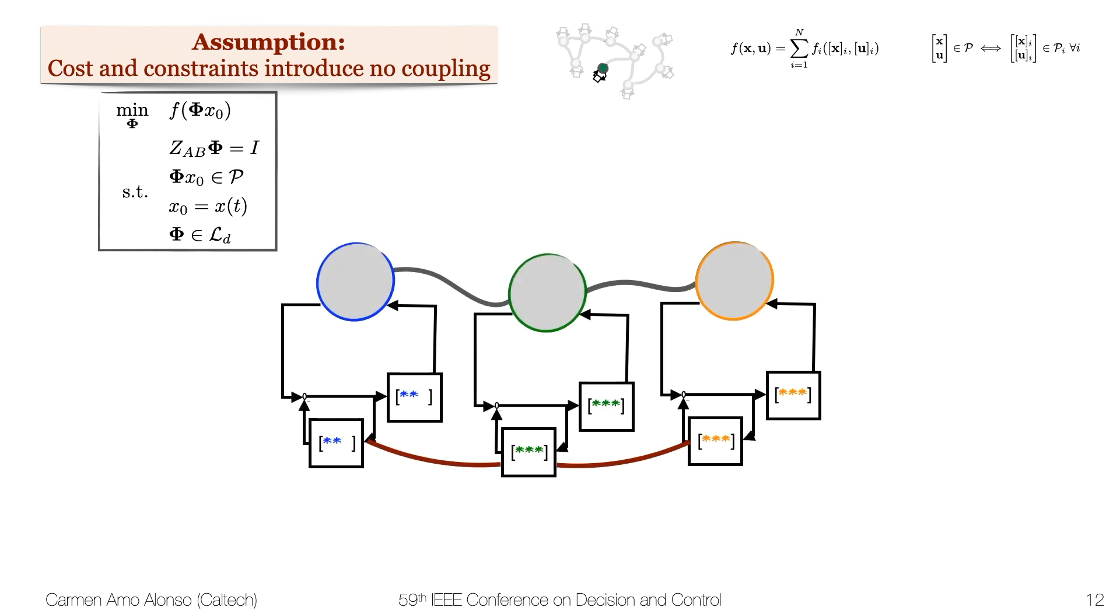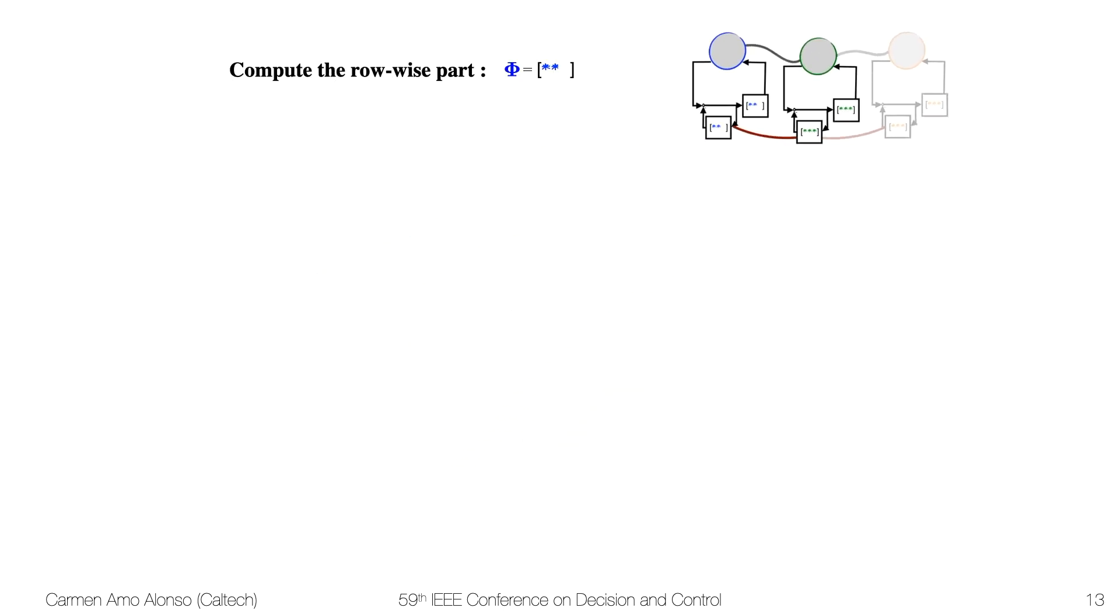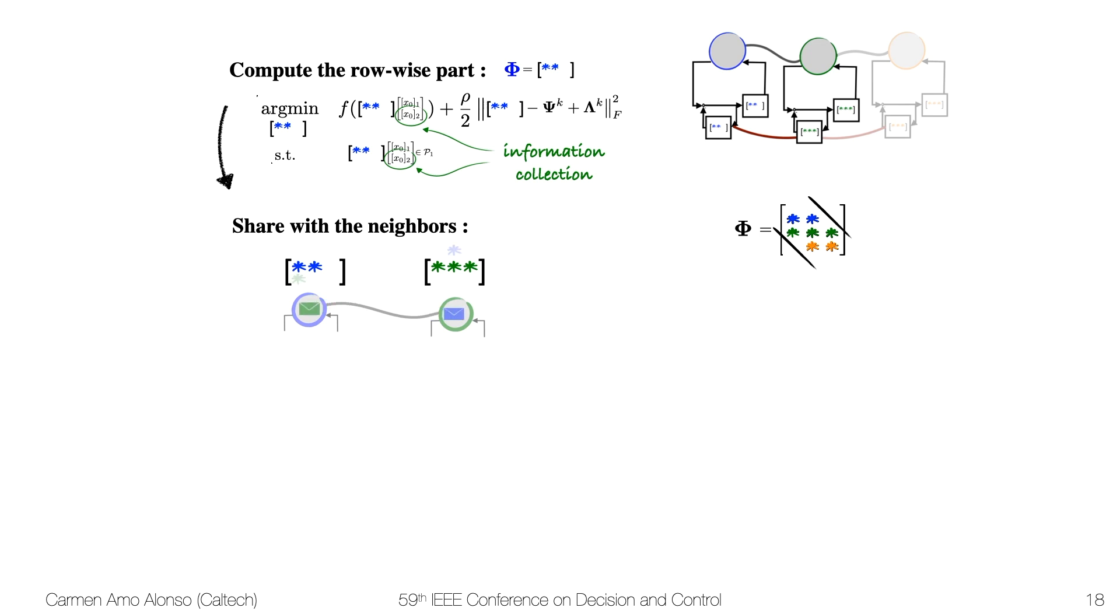And let me illustrate this algorithm in this three-node network where due to the locality constraints if I'm the blue subsystem I don't care what the orange subsystem is doing and I can only communicate with my neighbor, in this case the green subsystem. And we can focus on what the blue subsystem is doing. We split this problem into row-wise computations and column-wise computations for this matrix φ, and so we started with the row-wise computations. And as the blue subsystem we're only going to solve for the first row of φ, and this is the problem that we're going to solve for. Notice that we require an information collection step at the beginning of the algorithm to know what the initial condition was for our neighbors. Once we have computed the row we can exchange information with the neighbors to receive the components of the column.